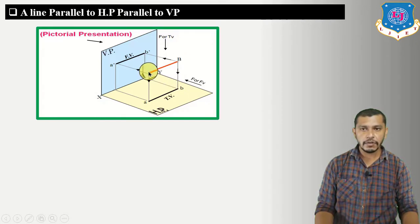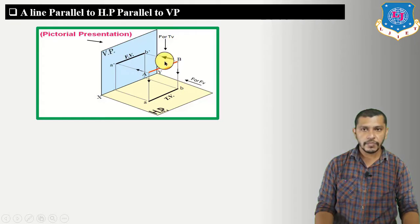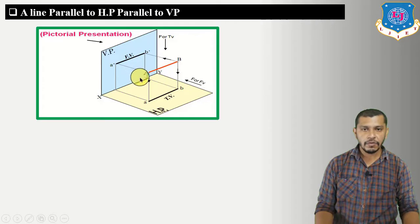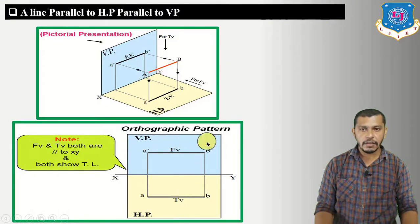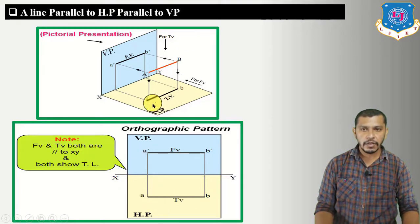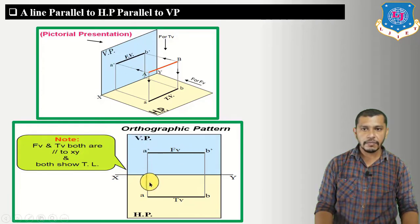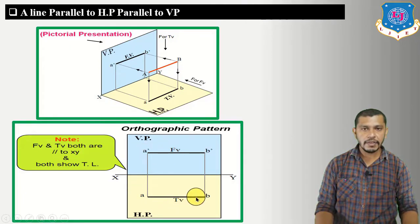To draw the elevation, we draw projection lines perpendicular to the vertical plane from A and B, getting A-dash and B-dash. Connecting them gives the elevation of line AB. After rotating the horizontal plane 90 degrees clockwise, the orthographic view shows the plan and elevation both parallel to the XY line. Since the line is parallel to both HP and VP, both the elevation and plan give the true length.